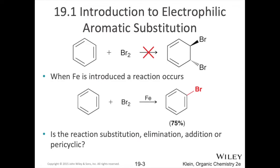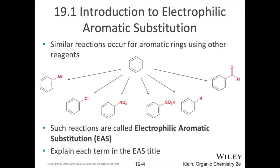We've already seen back in the chapter on substitution reactions that SP2 hybridized carbons aren't really good for forming carbocations, so it's not going to be a typical substitution. This type of reaction is what we call an electrophilic aromatic substitution, or EAS reaction. In all of these examples, we're going to swap out a hydrogen on our benzene ring for some other group — we just saw an example with bromine, but we can swap it out for a chlorine, a nitro group, a sulfate group, an alkyl group, or even a ketone group.